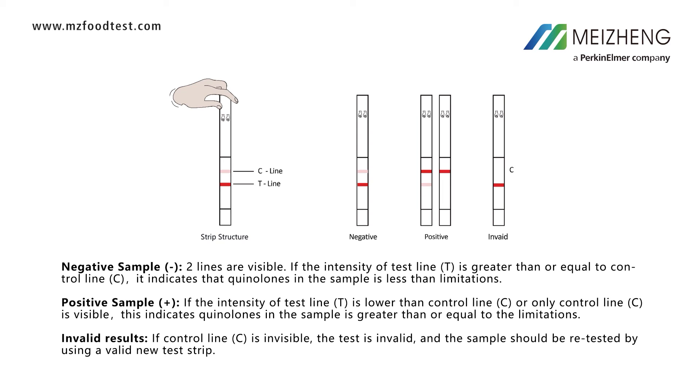Invalid results: if the control line is invisible, the test is invalid, and the sample should be retested using a valid new test strip.